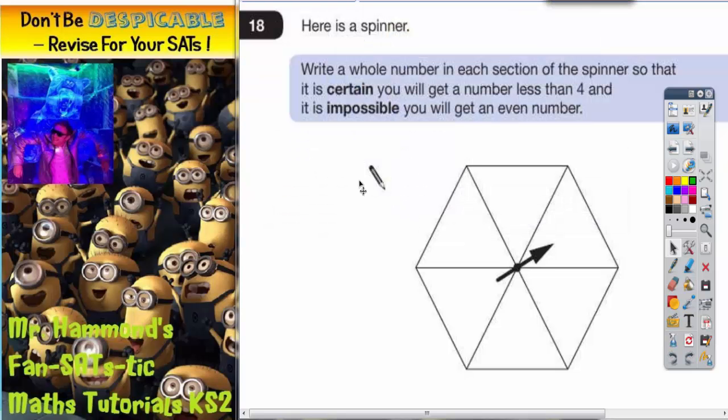Okay, here is a spinner. Question 18: Write a whole number in each section of the spinner so that it is certain you will get a number less than four and it is impossible you'll get an even number. We've really got to think about it before we go writing anything into the spinner, so it's a good idea to actually use the space at the side, just jot down your ideas before you go writing things into the spinner.